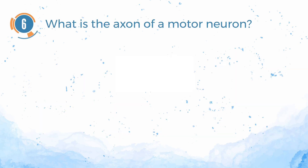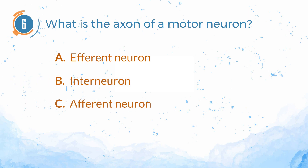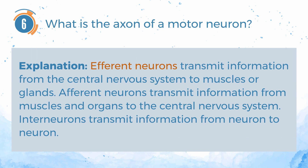Number 6. What is the axon of a motor neuron? A. Efferent neuron. B. Interneuron. C. Afferent neuron. The answer is A — efferent neuron. Efferent neurons transmit information from the central nervous system to muscles or glands. Afferent neurons transmit information from muscles and organs to the central nervous system. Interneurons transmit information from neuron to neuron.